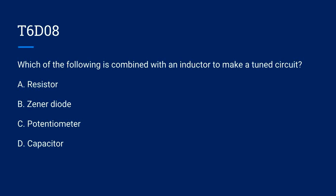T6D08. Which of the following is combined with an inductor to make a tuned circuit? A. Resistor. B. Zener diode. C. Potentiometer. Or D. Capacitor. The correct answer is D. Capacitor.